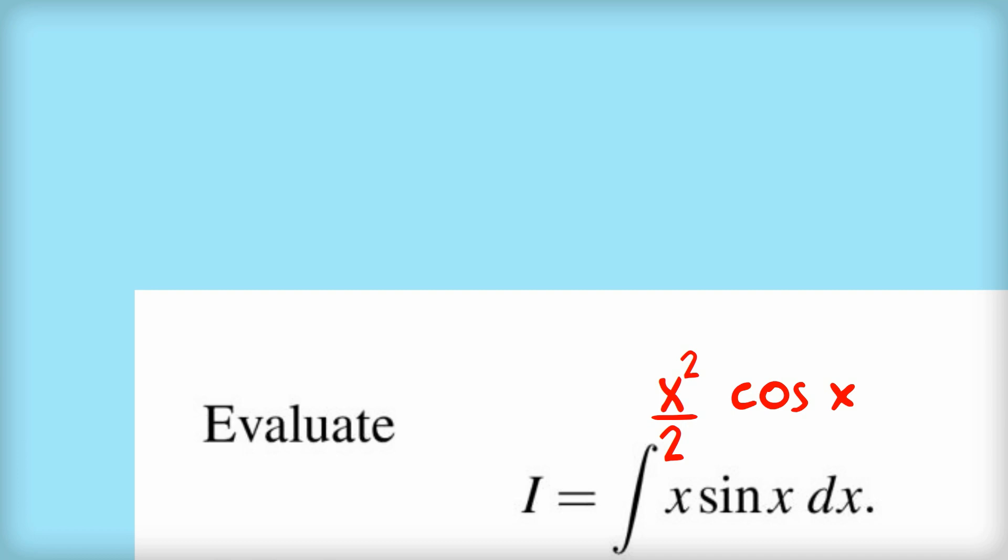So maybe I need to think about doing this the other way. The derivative of x is 1, and the integral of sine x is negative cos x. If I multiply 1 by negative cos x, I get negative cos x, which is very easy to integrate. So that's the way I probably want to go.